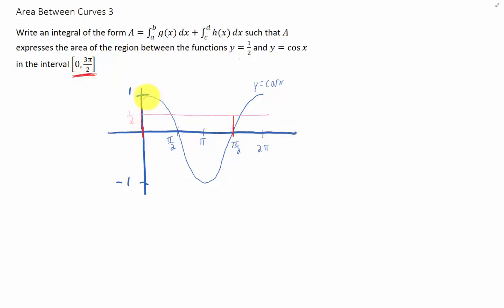The area we're looking for is this area here plus this area down here. Maybe you can see now why we have to split this up into two integrals to find the area. For these x values over here, cosine is the upper of the two functions, whereas for these x values through here, cosine is the lower of the two functions.